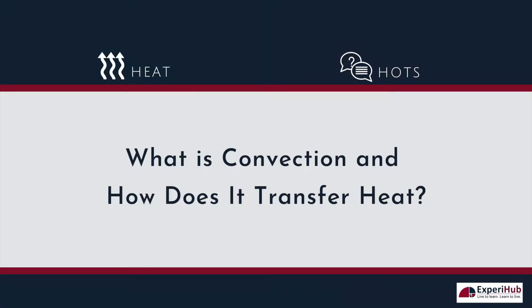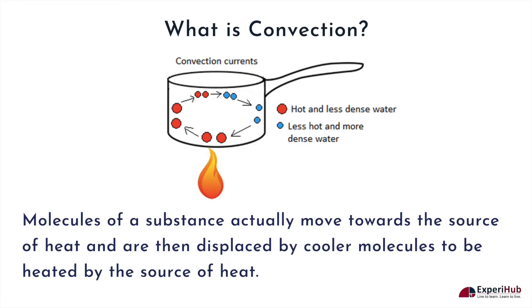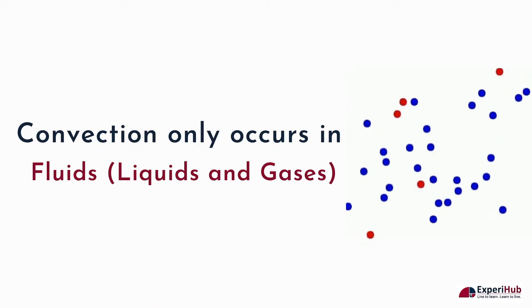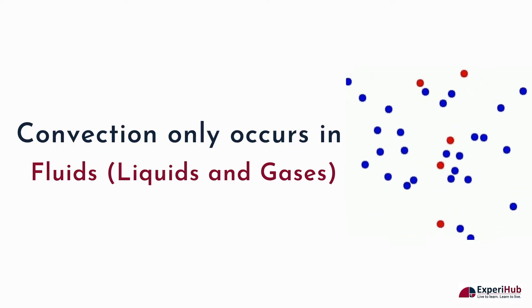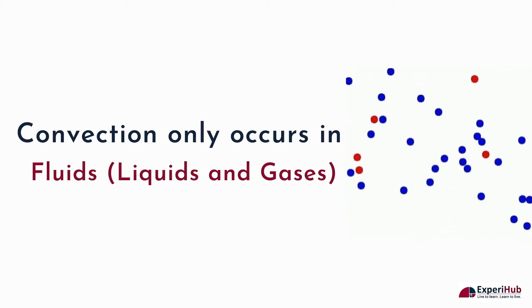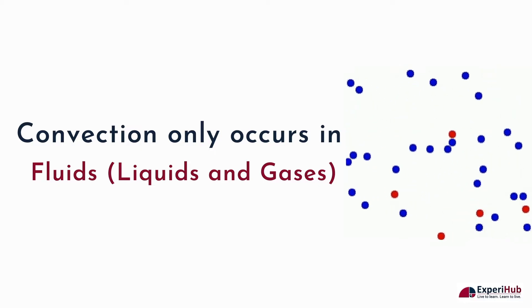What is convection and how does it transfer heat? Convection is the method of heat transfer in which the molecules of a substance actually move towards the source of heat. They are then displaced by cooler molecules to be heated by the same source of heat. Convection only occurs in fluids — and by fluids we mean liquids and gases.